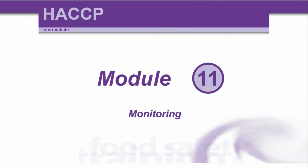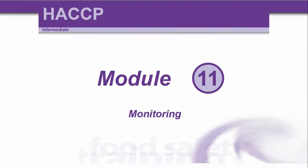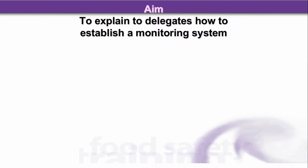Okay, so this is module 11 — monitoring — in the HACCP intermediate level 3 course. The aim of this unit is to explain to delegates how to establish a monitoring system.